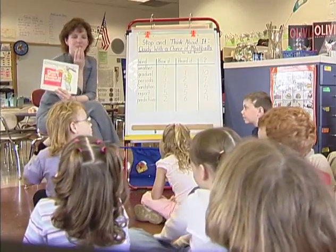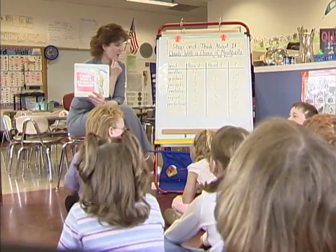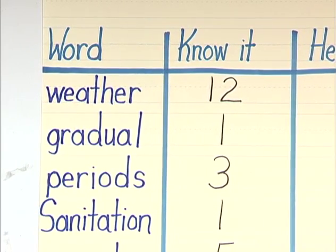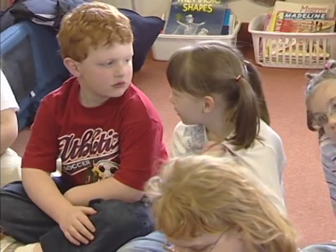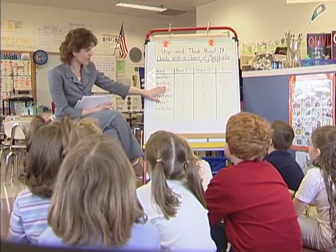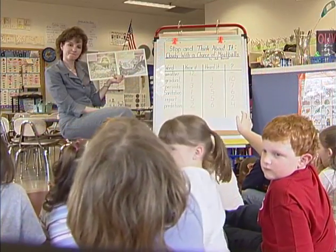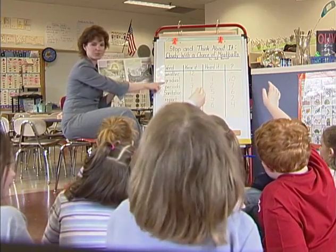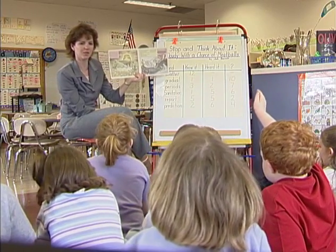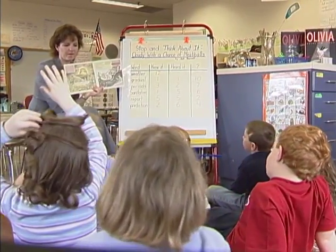The teacher tells students that as she read the book aloud, they stopped and talked about some words they hadn't heard before. The first word was 'weather' — everybody knew that word. The next word on the list was 'gradual.' Some students knew the word; one could use it in a sentence. The teacher re-reads: 'We're followed by gradual clearing,' and asks students to think about what gradual means in that context.